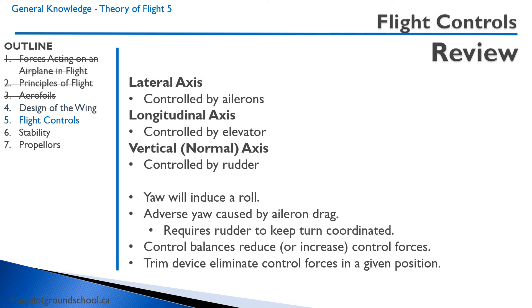The lateral axis of an aircraft is controlled by the ailerons. The longitudinal axis is controlled by the elevator, and the vertical or normal axis is controlled by the rudder. When the aircraft yaws, it will induce a roll. When applying ailerons to start a turn, you can have a phenomenon called adverse yaw, which is caused by aileron drag — this requires rudder to keep the turn coordinated.